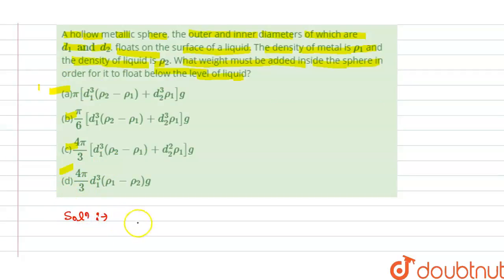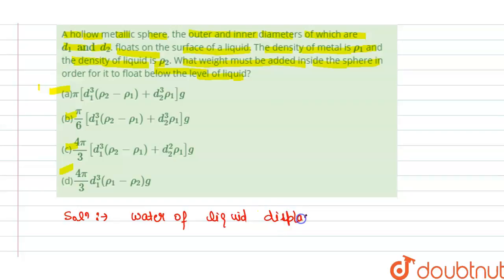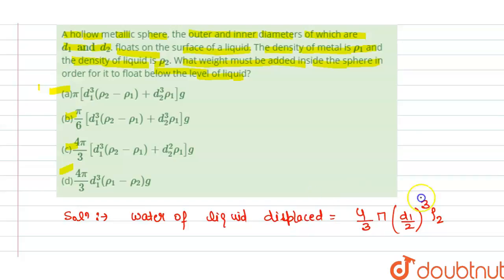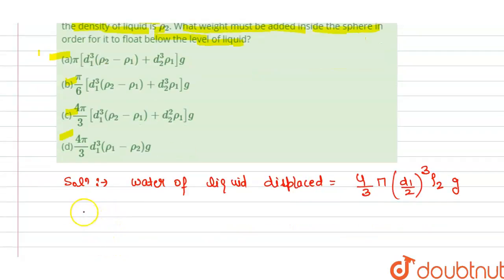The solution: the weight of liquid displaced is equal to (4/3) × π × (d1/2)³ × rho2 × g, where rho2 is the density of the liquid and g is acceleration due to gravity.